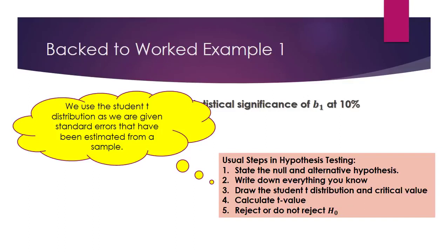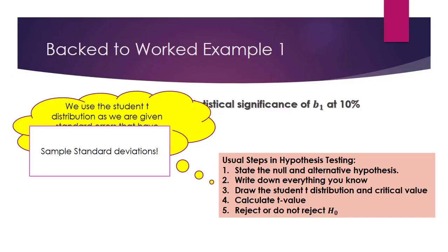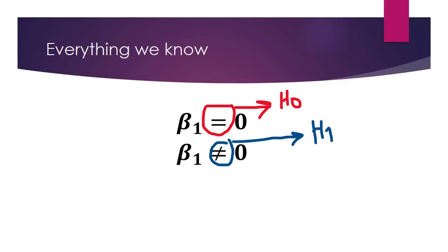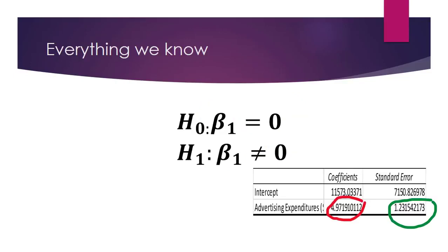With all regression-based hypothesis testing, we use the student t-distribution as we are given the standard errors from the computer output, which have been calculated from the sample — that is, we are using sample standard deviations. First things first, we have to set out the null and alternative hypothesis. The question asks whether there is a relationship between advertising expenditures and sales, so it is asking whether population coefficient beta 1 is equal to 0. The counterclaim is the exact opposite: beta 1 is not equal to 0. Recall that the claim with the equal sign is the null hypothesis, so we now write down H0 and H1.